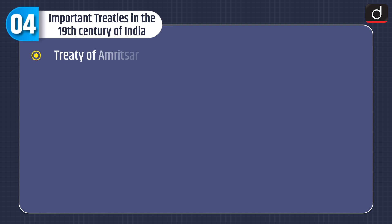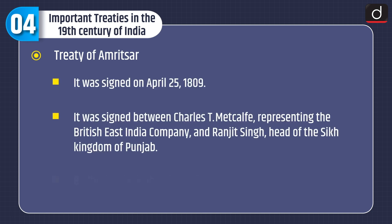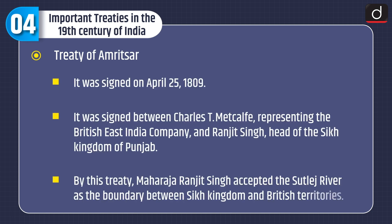Treaty of Amritsar. It was signed on April 25, 1809, between Charles T. Metcalf, representing the British East India Company, and Ranjit Singh, head of the Sikh Kingdom of Punjab. By this treaty, Maharaja Ranjit Singh accepted the Sutlej River as the boundary between the Sikh Kingdom and British territories.